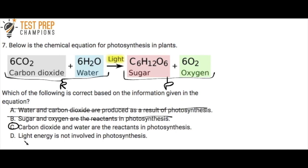And let's just go over D as well here. So D: Light energy is not involved in photosynthesis. Well, hopefully you can see right here that yes, light energy is involved in photosynthesis, so D is incorrect.